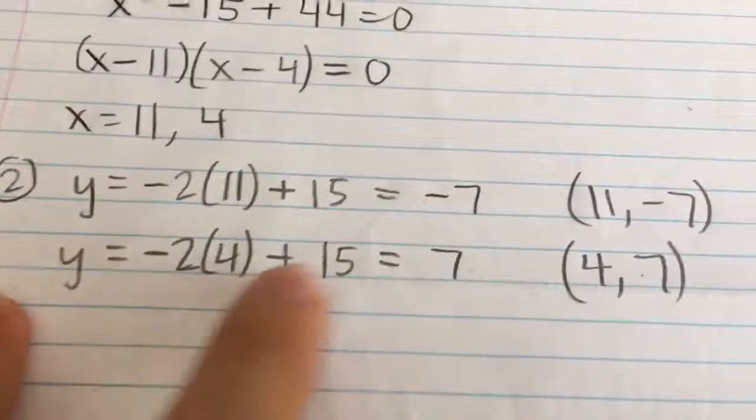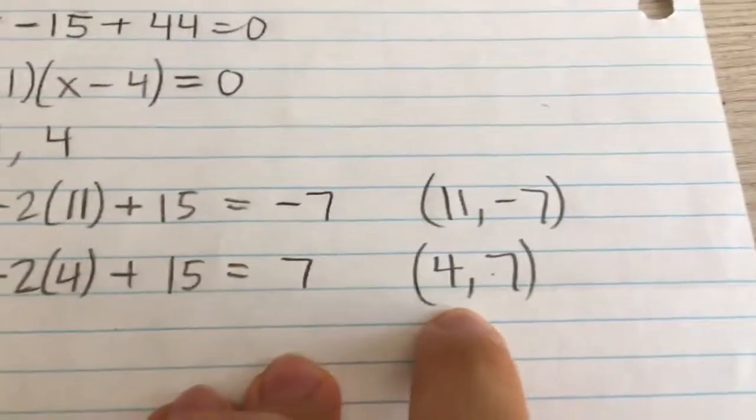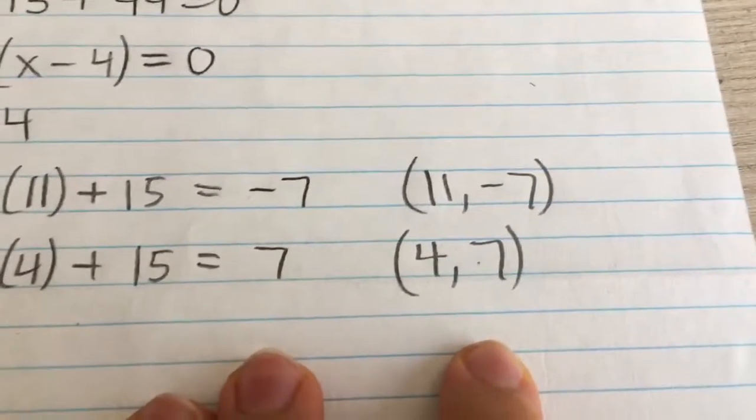And for the other one, I just plug in 4 and I'll get positive 7. So that means 4, 7 is another solution. These are our two solutions.